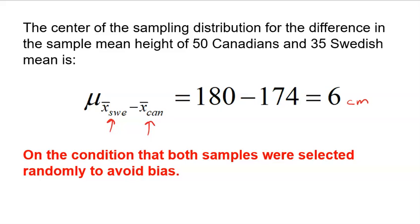I specifically went Swedish minus Canadian because I wanted to get a positive difference. I could have done it in the other order and got a negative difference, but what's most important is that the 6 centimeters is in favor of Swedish men. They are typically going to be taller.